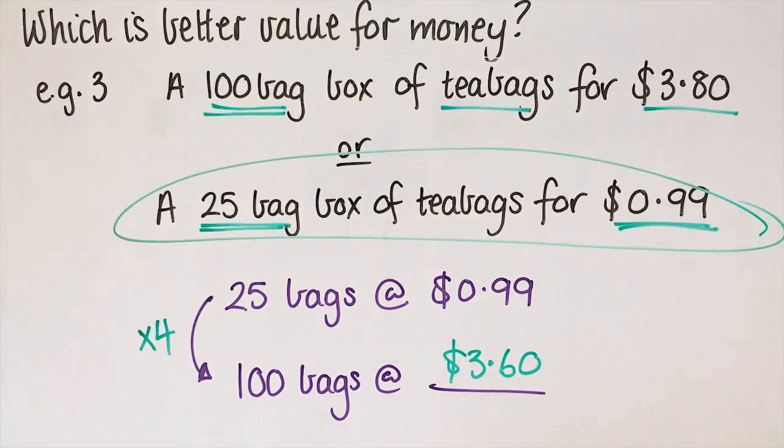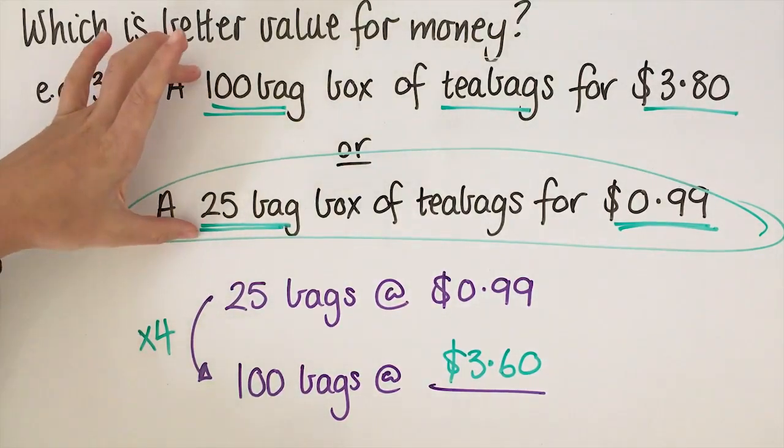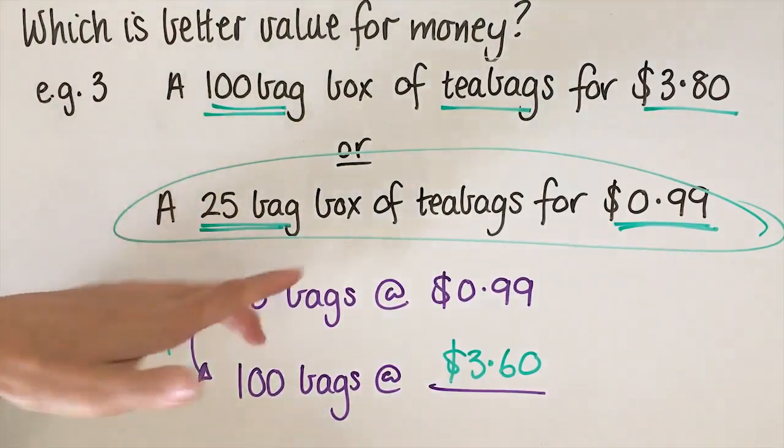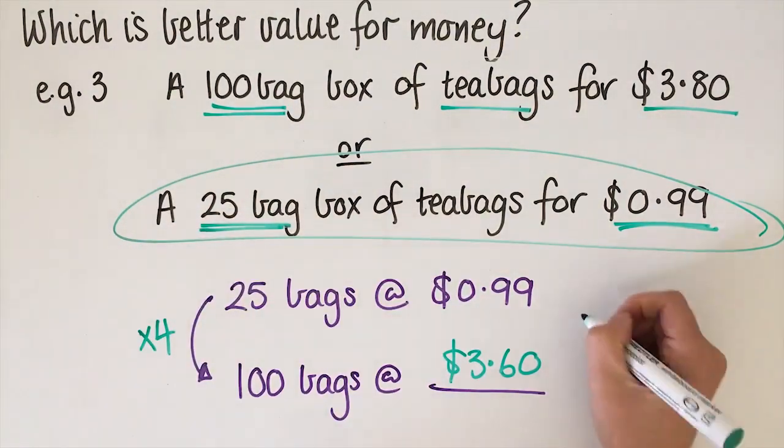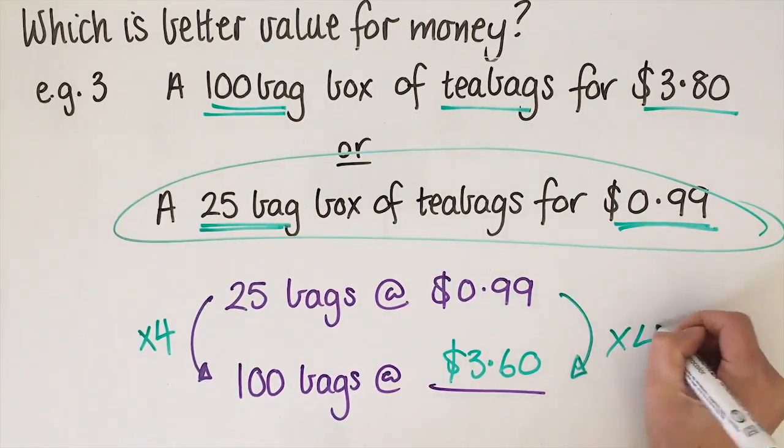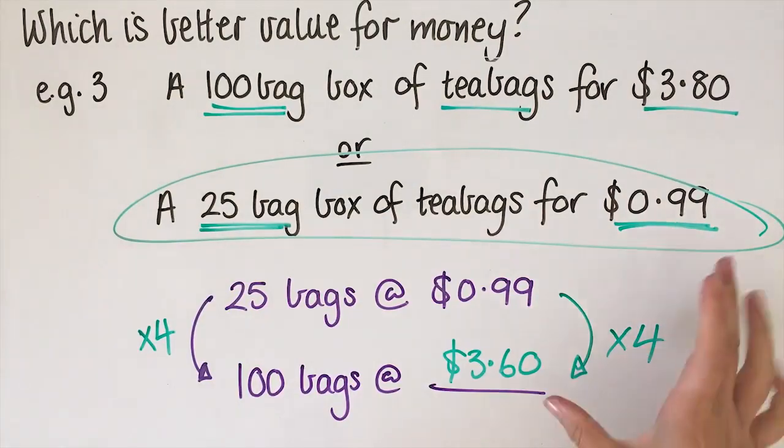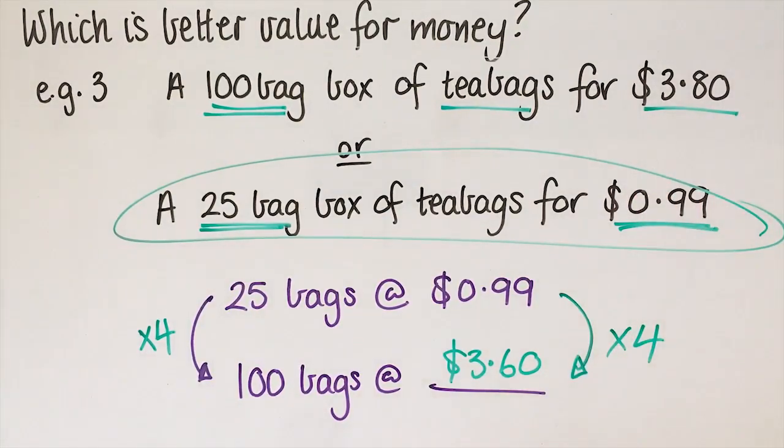If we think back to our learning intention and success criteria, it was to be able to figure out what's better value for money. To do that, you need to make the volume the same, then multiply the money by whatever you had to multiply the volume by. And then you just compare those two prices to see which is better value. If you can do all of those things, then you've met today's success criteria.